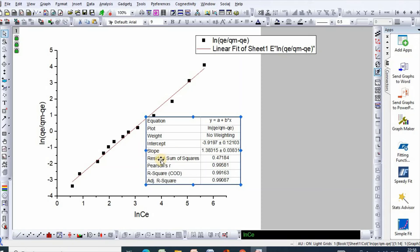So, here is your slope, which is n, n equal to 1.38. And from intercept, you can easily calculate K. So, this is how we can fit linear Toth isotherm using Origin Pro.